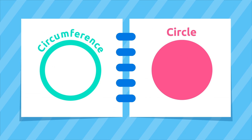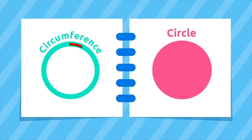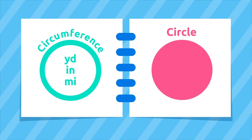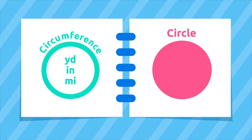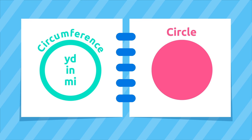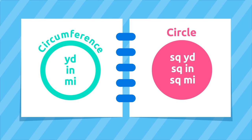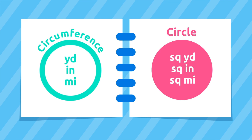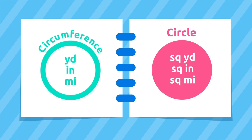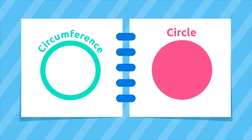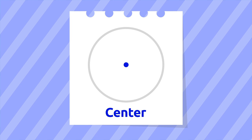The circumference is a line — that's why we measure its length in yards, inches, or miles. However, the circle is a plane figure — that's why we measure its surface in square yards, square inches, or square miles. We can distinguish the following elements in a circumference and a circle.